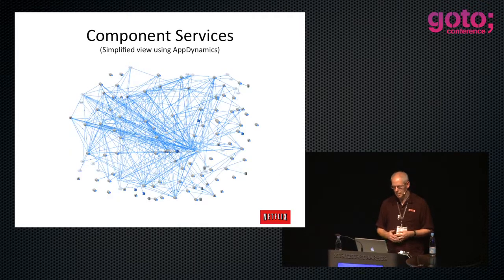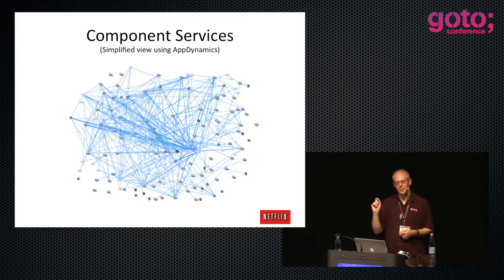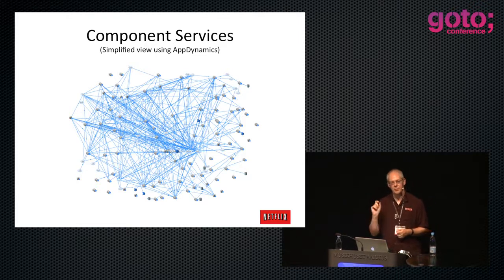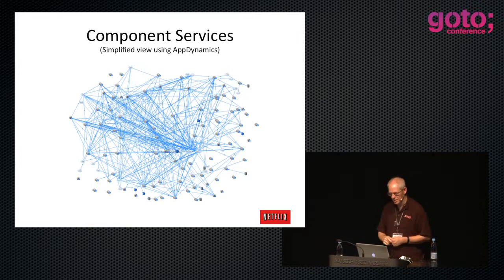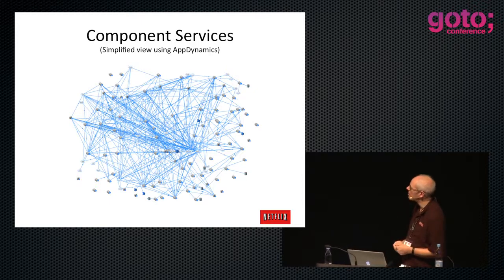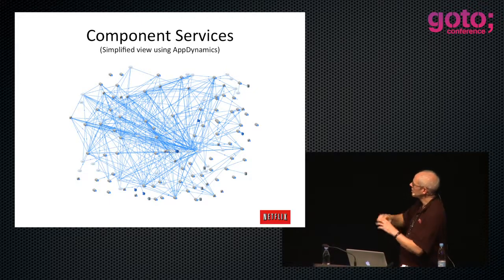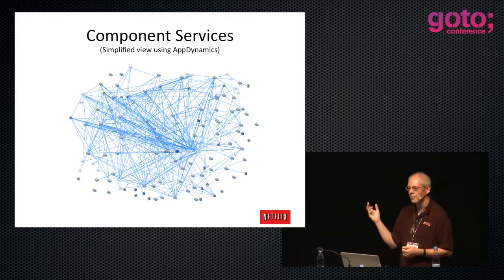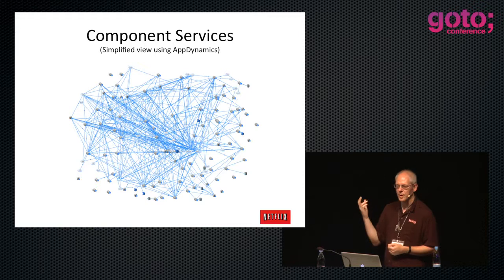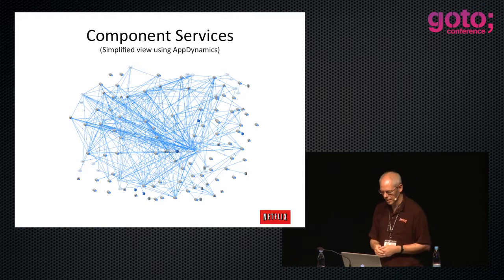This is one view of our service. Each little box here is a different tier - not a machine but a group of machines. This shows traffic between the different services, actually running in our test account because the production one is even harder to draw and has too much on it. Some of those boxes might have 500 servers in them; some might be just five or six.